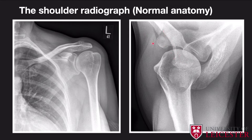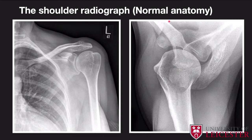On the axial view you've got the acromioclavicular joint. Work out which is anterior — the coracoid process is always the most anterior structure. Posterior to that you have the acromion. Once you've established where the acromion is, you know it articulates with the clavicle. This is the acromioclavicular joint — there's a tiny space because there is cartilage and an articular disc. Finally, the humeral head is articulating with the glenoid. Remember, you'd have labrum and cartilage within that space — this is essentially your ball-and-socket joint of the shoulder.